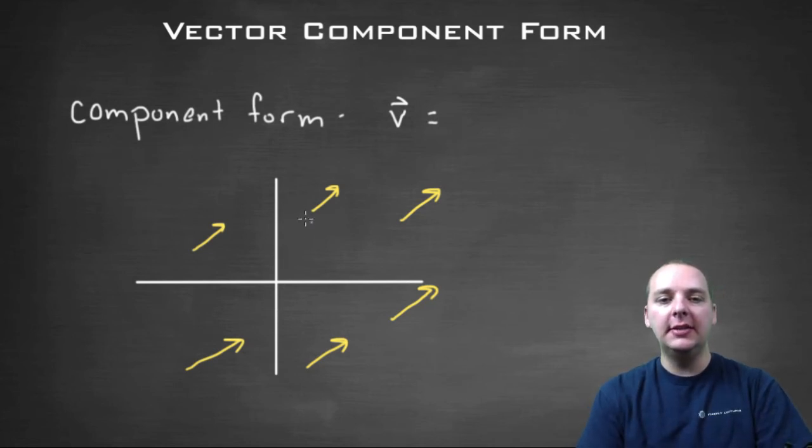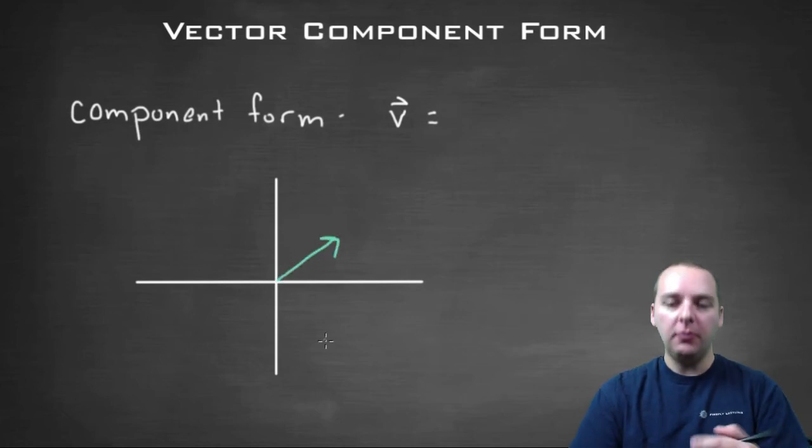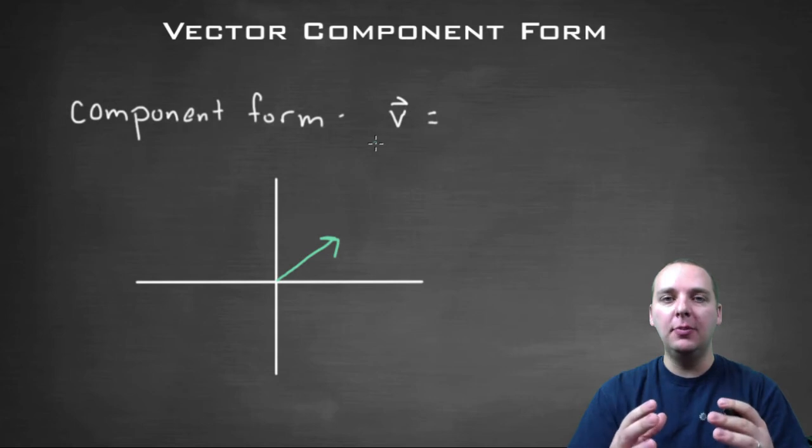So if you take all these guys and just wipe them all away, and just draw one representative example, with somebody starting at the origin that has that direction and that magnitude, this represents that vector. It represents all those infinitely many line segments, right?